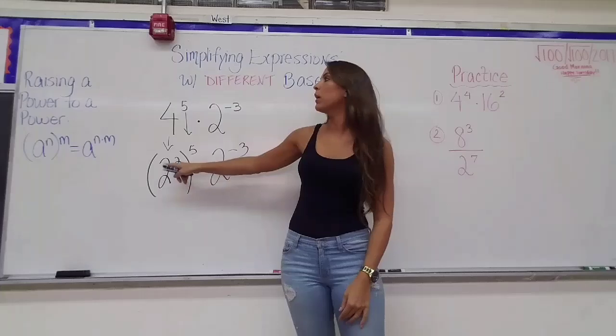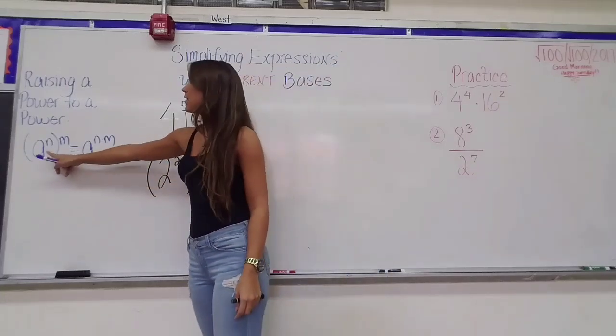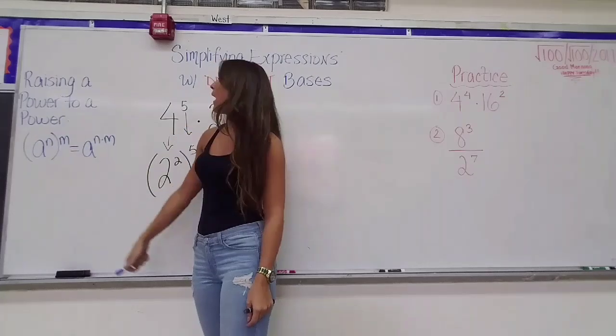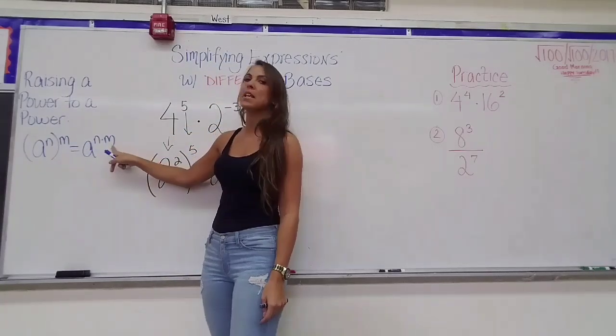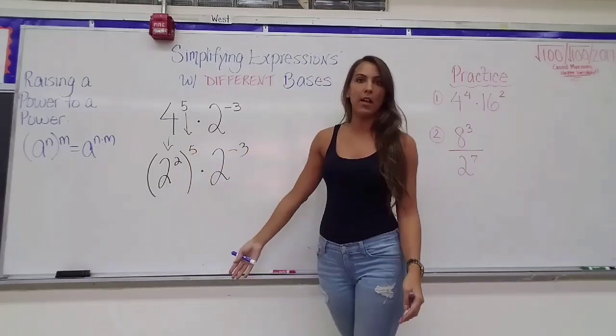What I have to do first is I see that I have a power being raised to another power. So in case you don't know it yet, over on the left, raising a power to another power, the rule is a to the n being raised to the m power is going to equal a to the n times m. Meaning if you have an exponent being raised to an exponent, multiply them.